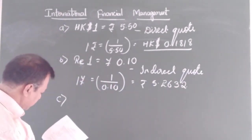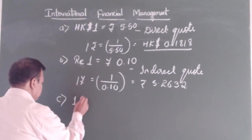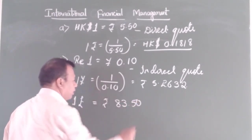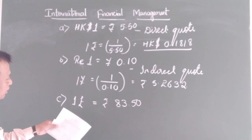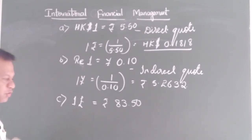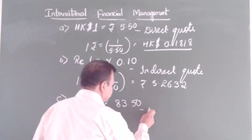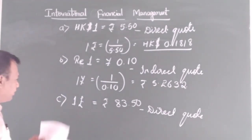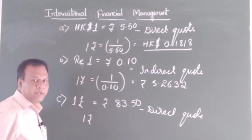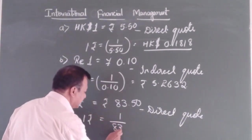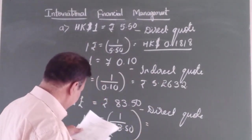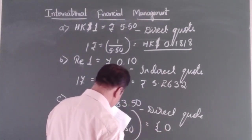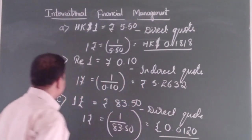The third problem is: 1 pound is equal to rupees 83.50. This is expressed in terms of 1 unit of foreign currency, so it has to be a direct quote. For the corresponding indirect quote, we express 1 unit of home currency: 1 rupee is equal to 1 divided by 83.50, which gives us pound 0.0120. This is the indirect quote.